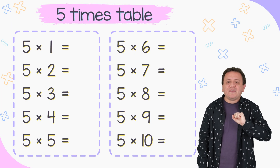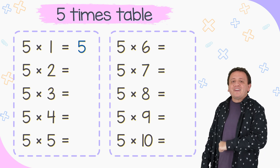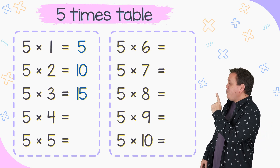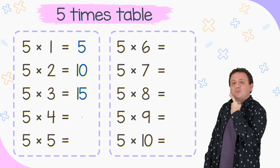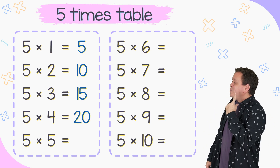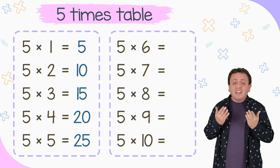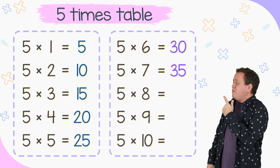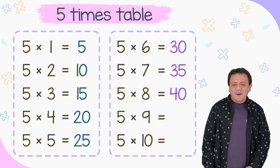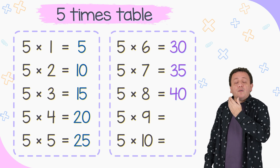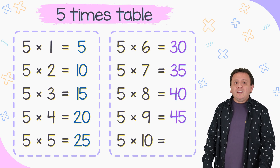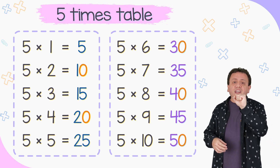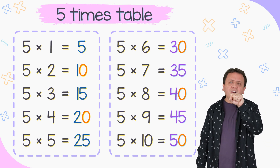And now the 5 times table. 5 times 1 equals 5. 5 times 2 equals 10. 5 times 3 equals 15. 5 times 4 equals 20. 5 times 5 equals 25. 5 times 6 equals 30. 5 times 7 equals 35. 5 times 8 is 40. 5 times 9 equals 45. And 5 times 10 equals 50. Pay attention: all the products in the 5 times table end with 0 or 5. They always end with 0 or 5.